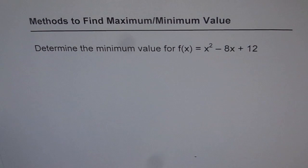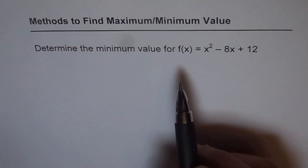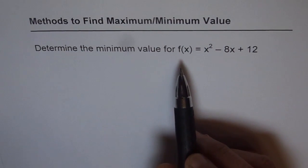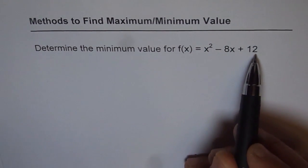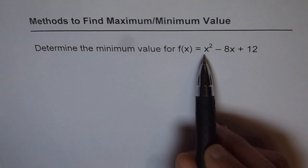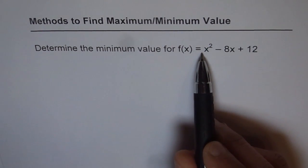If the parabola opens up, then it has a minimum value. And if it opens downwards, then it has a maximum value. When a given equation is like x squared minus 8x plus 12, the coefficient of x squared is positive. Since it is positive, it opens up and it will have a minimum value.